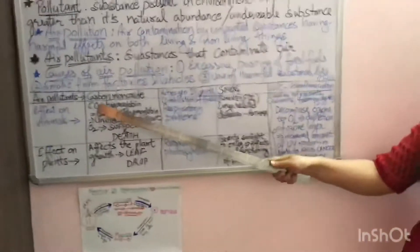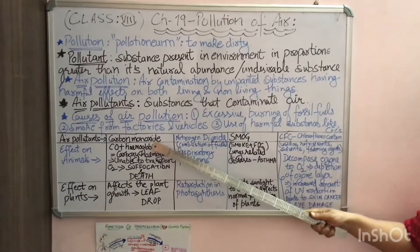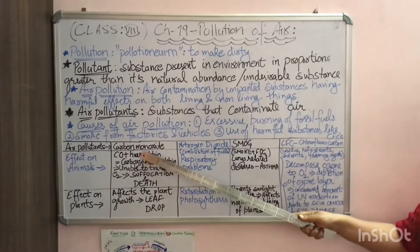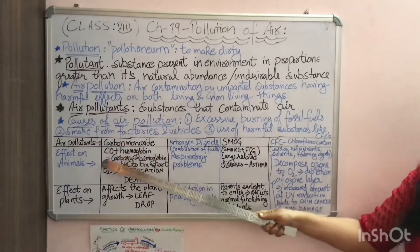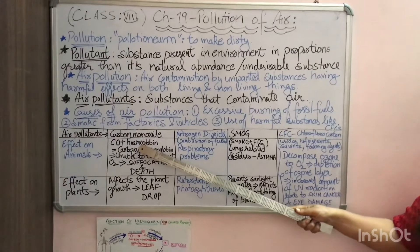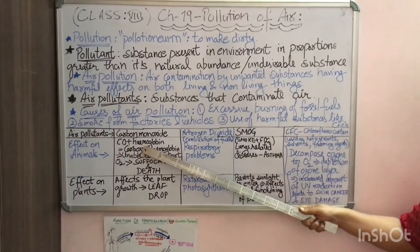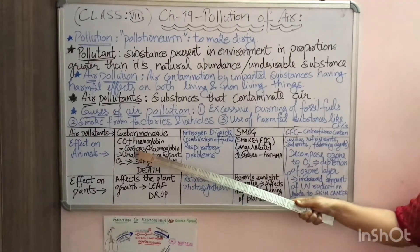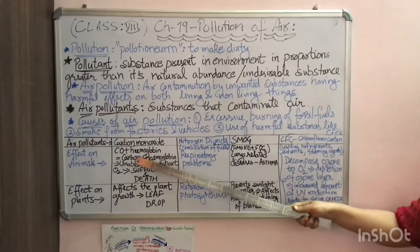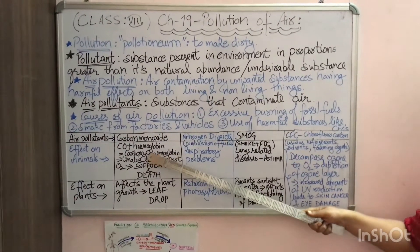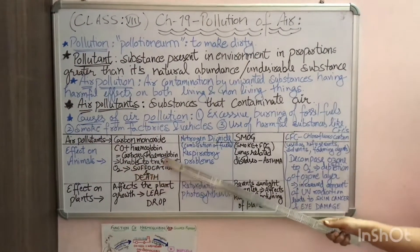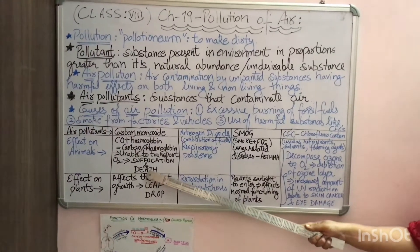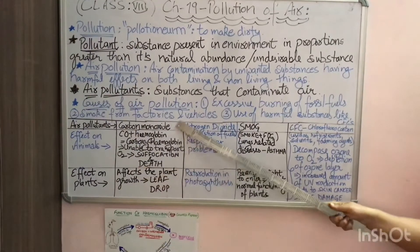Carbon monoxide is released due to incomplete combustion of fuels. When carbon monoxide is inhaled, hemoglobin has a much greater preference for carbon monoxide than for oxygen. So instead of forming oxy-hemoglobin, it forms a complex called carboxy-hemoglobin. This means hemoglobin is unable to carry oxygen to the body cells, leading to suffocation due to lack of oxygen, which can sometimes even cause death.